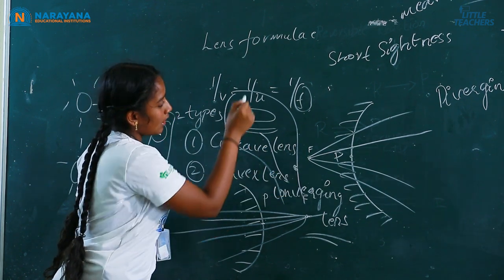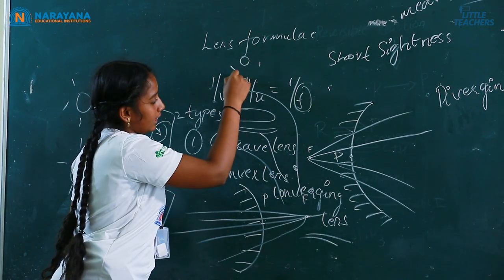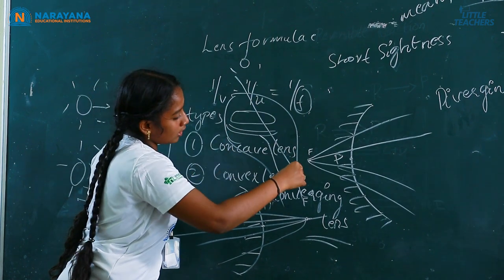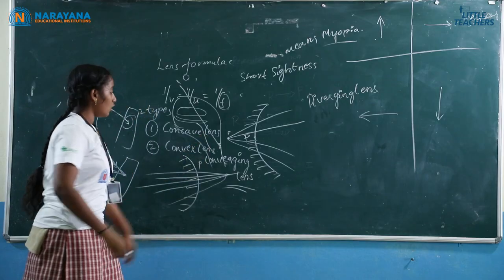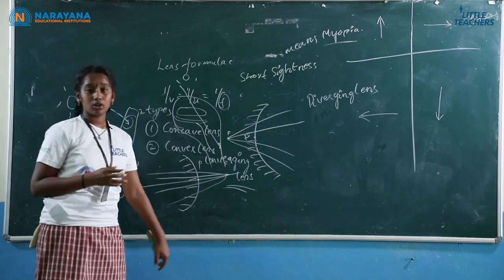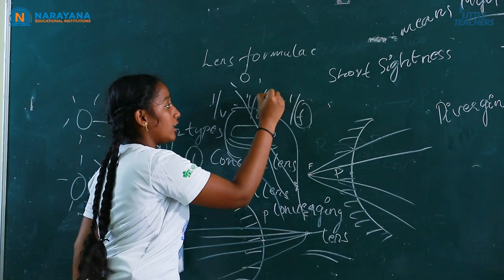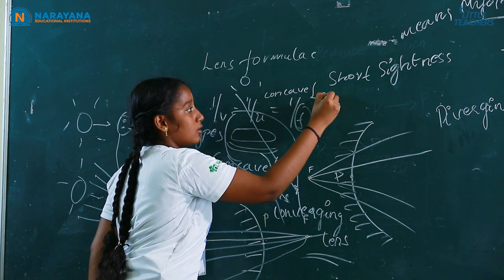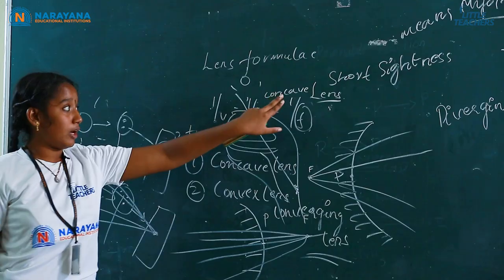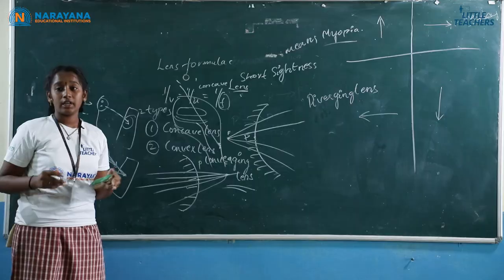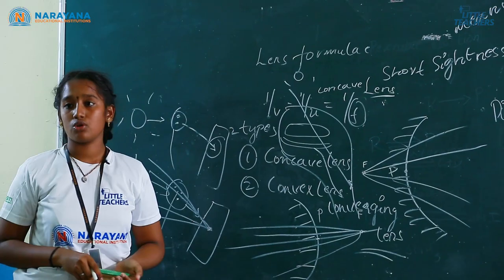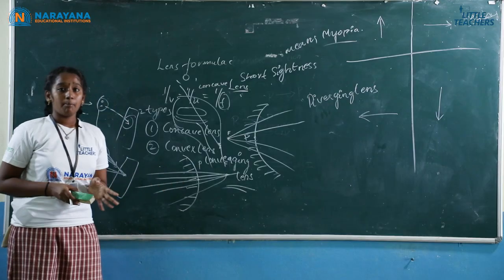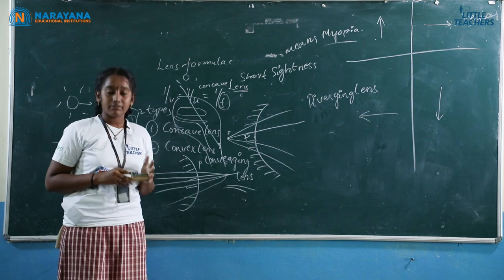Here there is a retina. If the sunlight falls very clearly, it will reflect on this retina. So to avoid this, we have to use a concave lens. Because with the use of the concave lens, we can see the far objects also. And for long-sightedness, we will use the convex lens.